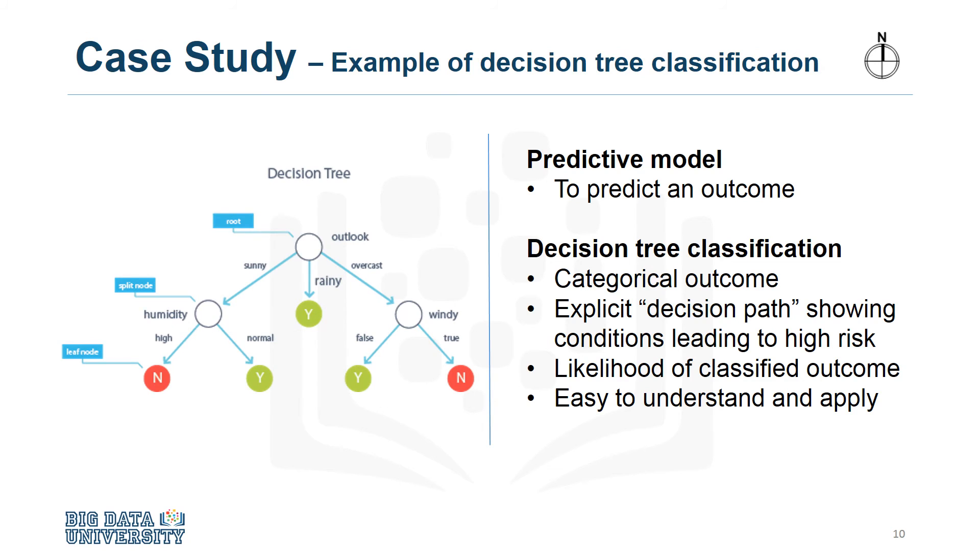A decision tree classification model is easy for non-data scientists to understand and apply to score new patients for their risk of readmission.